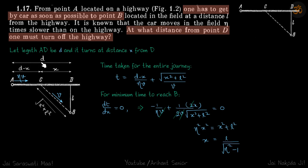Let's assume that initially it was at a distance D from the point D. And let's say he takes a turn at a distance x. So this is x, this is D minus x. So we have assumed both D and x.